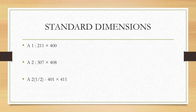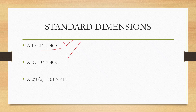Standard dimensions of cans: the first can has a dimension of 211 × 400, the second can is 304 × 408, and the third type is 401 × 411. You may be asked what the standard dimensions of a can are, so please learn these dimensions — this is very important.